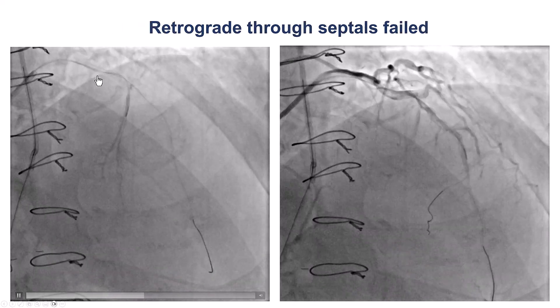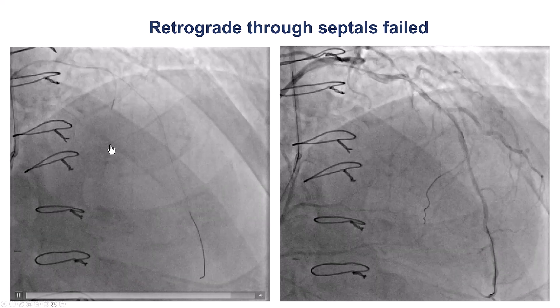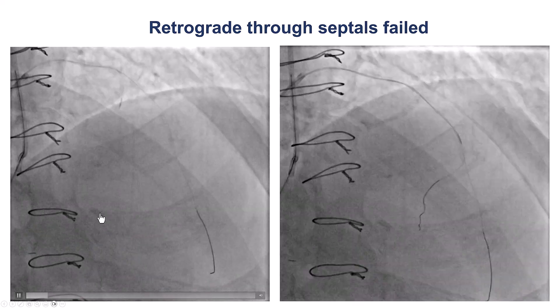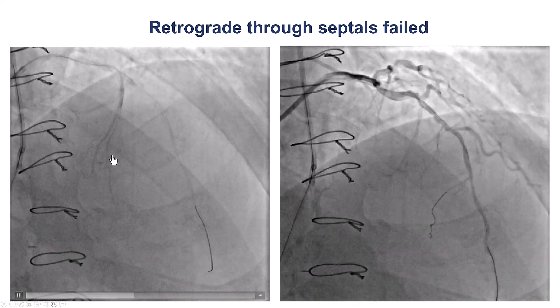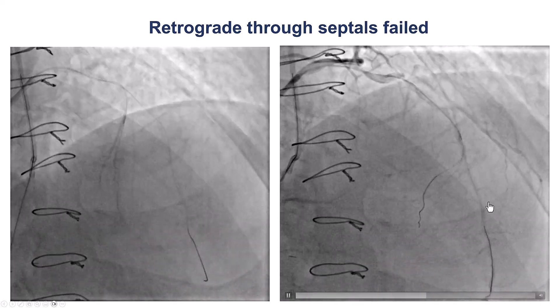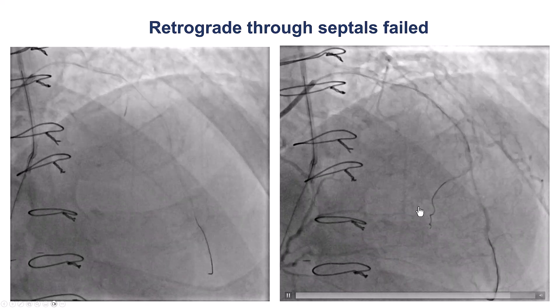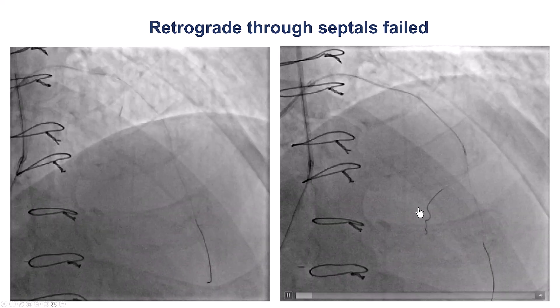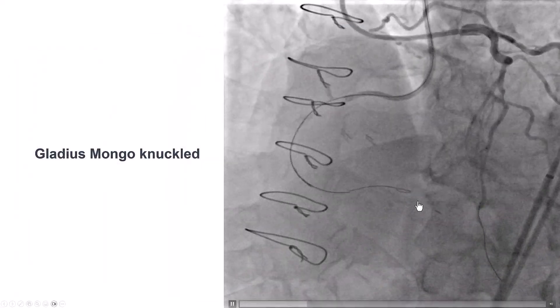After this, we decided to do a retrograde attempt. We performed selective injections through the septals — the first and third septal — but unfortunately we were not able to advance a guidewire through those.